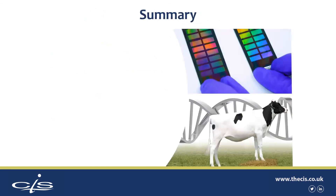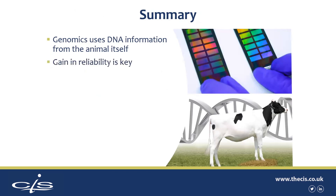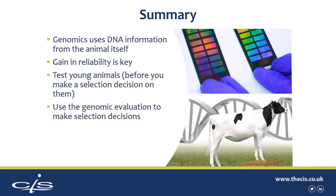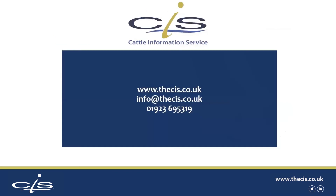So a summary of the presentation: genomics uses DNA information from the animal itself. The gain in reliability is really the key benefit from genomic testing — the increase in the knowledge of the genetic merit of the animal. Focus on testing young animals before you make any selection decision on them — selection decision being whether to keep them as replacement females and also which bulls to breed them to. Once you have the genomic evaluation results, base your selection decisions on those results. Thank you very much. For further information you can contact CIS using the following resources.